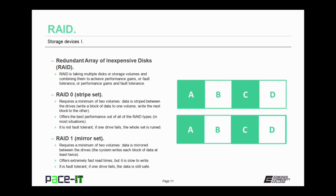To combat that, RAID 1 was developed. RAID 1 is also known as a mirror set, and it too requires a minimum of two volumes. The data is mirrored between the two drives — the system writes each block of data at least twice. RAID 1 offers extremely fast read times, but it's relatively slow in write time as it needs to write twice. However, it is fault tolerant — if one drive fails, the data is still safe.